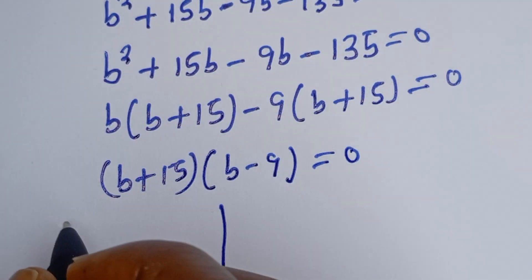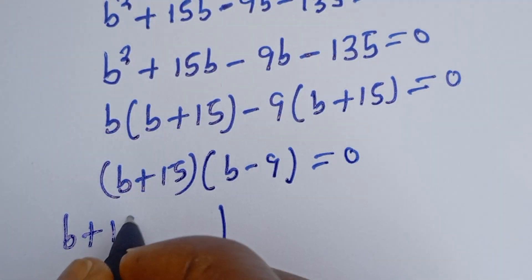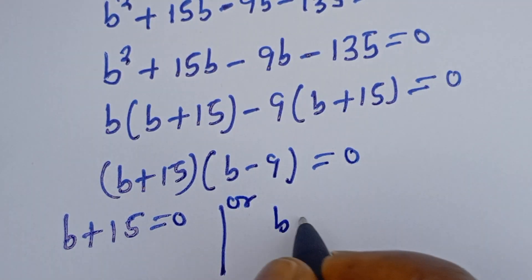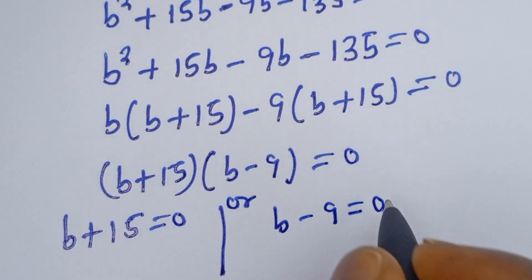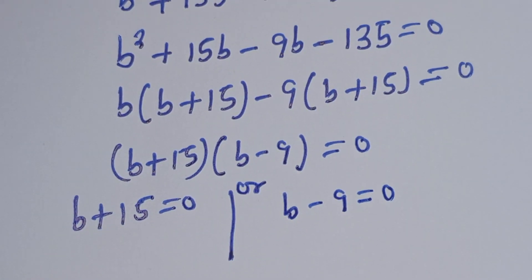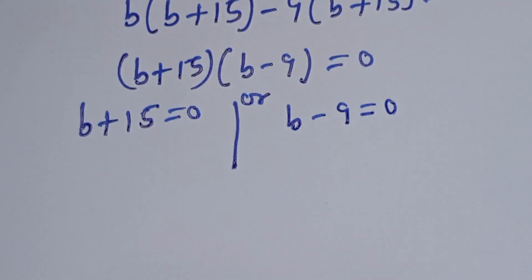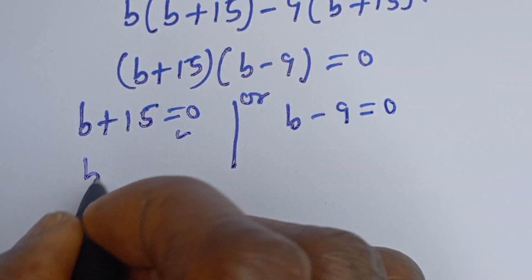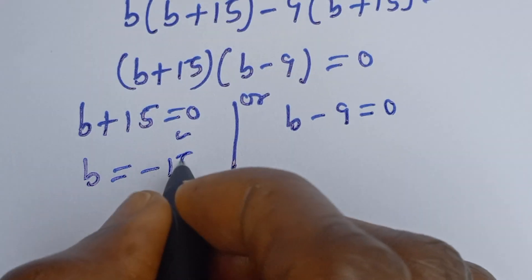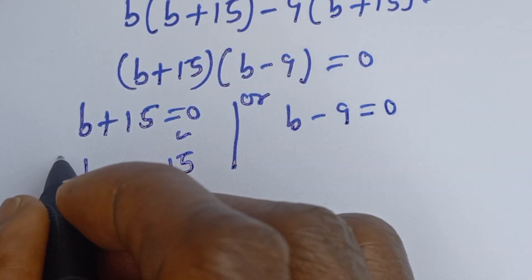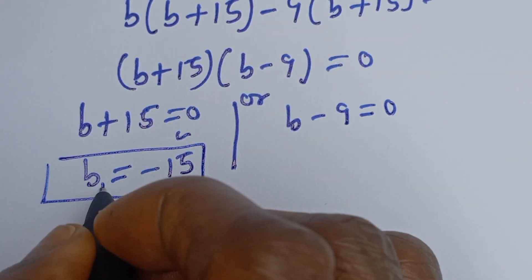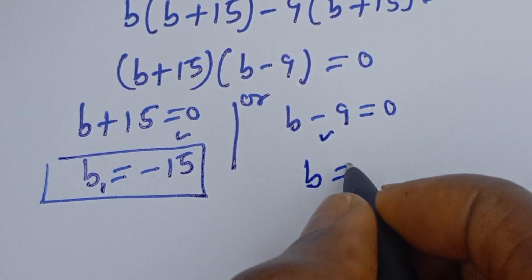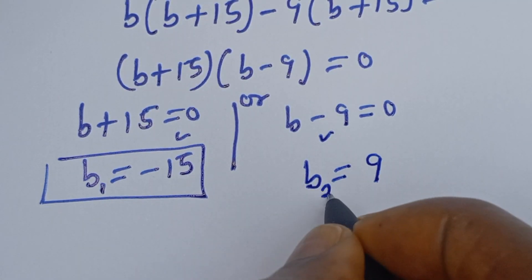The first case is B plus 15 is equal to 0, then B is equal to minus 15. Let's call this B1. The second case gives B minus 9 equal to 0, so B is equal to 9. Let's call this B2.